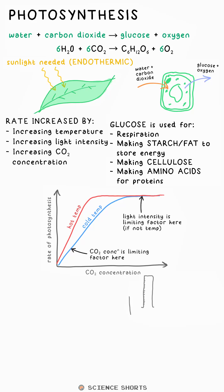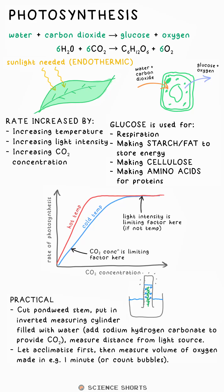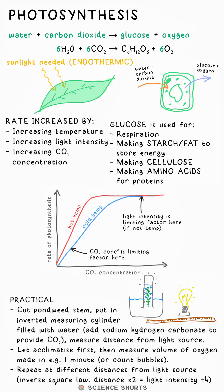Here's the practical on this. We can measure the rate of photosynthesis by submerging pond weed in an inverted measuring cylinder. We measure the volume of oxygen made over time. We can instead count the bubbles, but it's less accurate. The independent variable could be the light intensity, and that's changed by varying the distance from the light source, for example, a lamp.